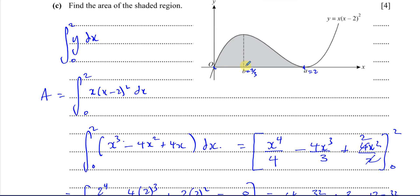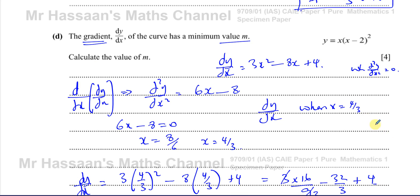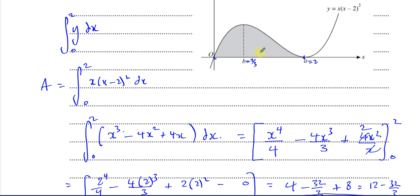So the gradient has a positive value, becomes 0, then has a negative value. Somewhere between x equals 2 thirds and x equals 2 — specifically at x equals 4 over 3 — the gradient reaches its minimum negative value. That is called the point of inflection, and the minimum gradient value there is negative 4 over 3.